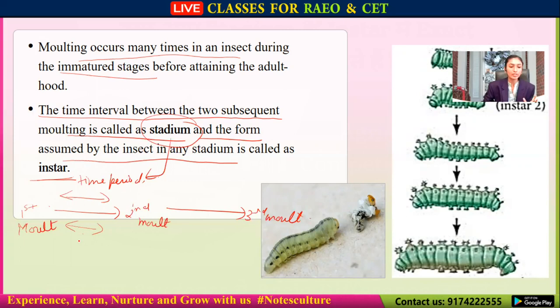When the larva hatches, the form it is in will be called the first instar. After the first molt, it will be called the second instar. After the second molt, it will be called the third instar, and so on.